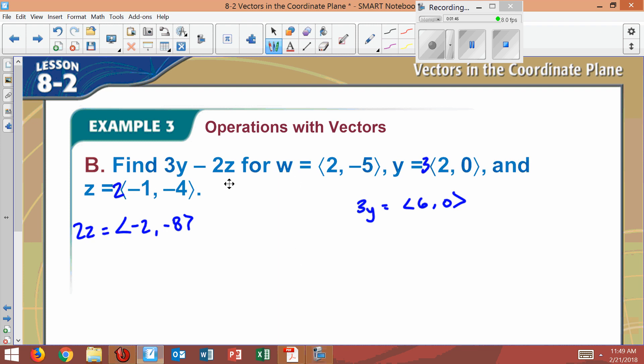Now we want to subtract these. It says 3y minus 2z. So you take your 3y down, which is 6, 0, and we're going to subtract it from 2z, which is negative 2, negative 8.